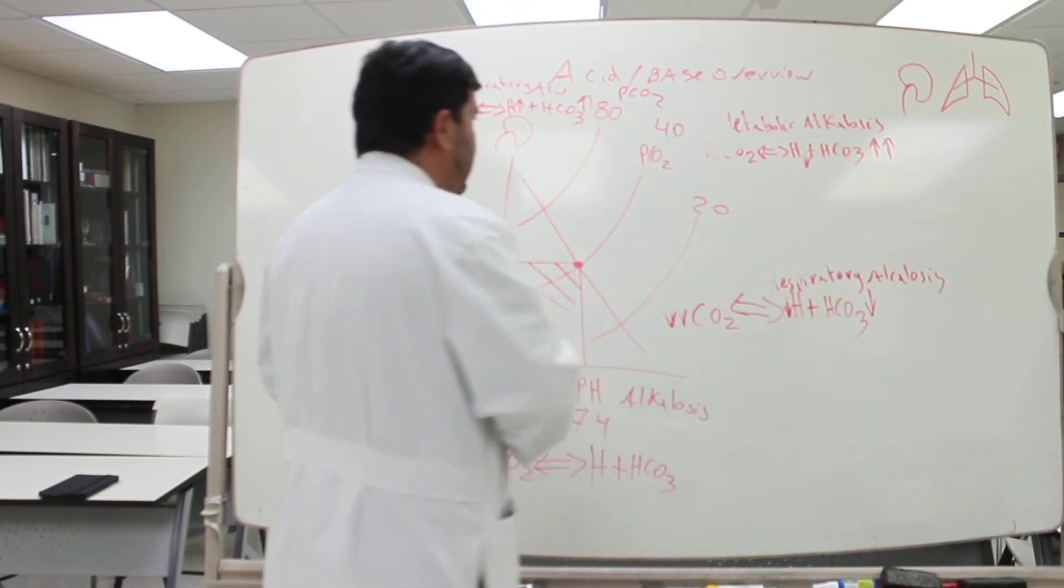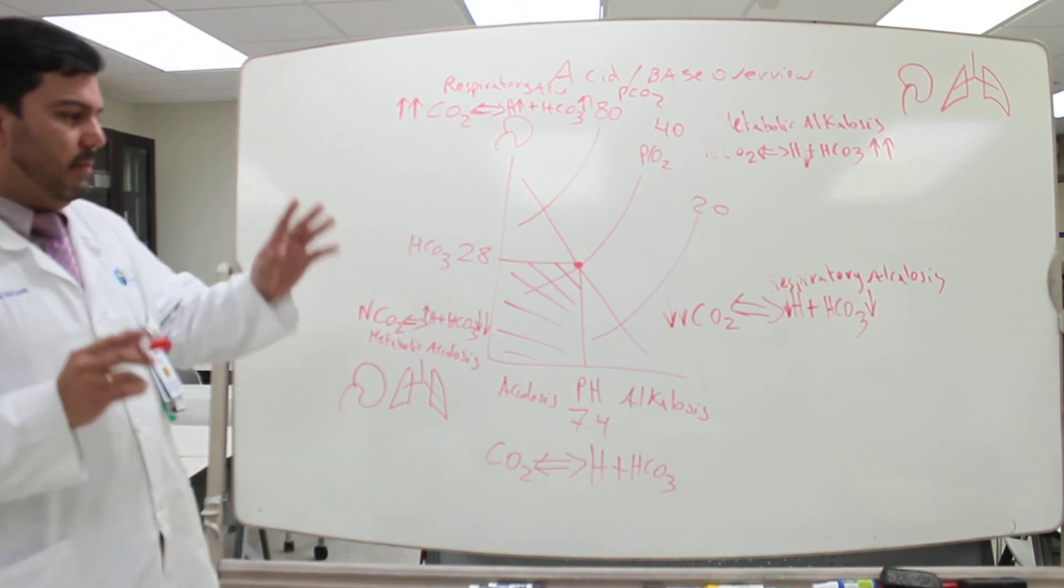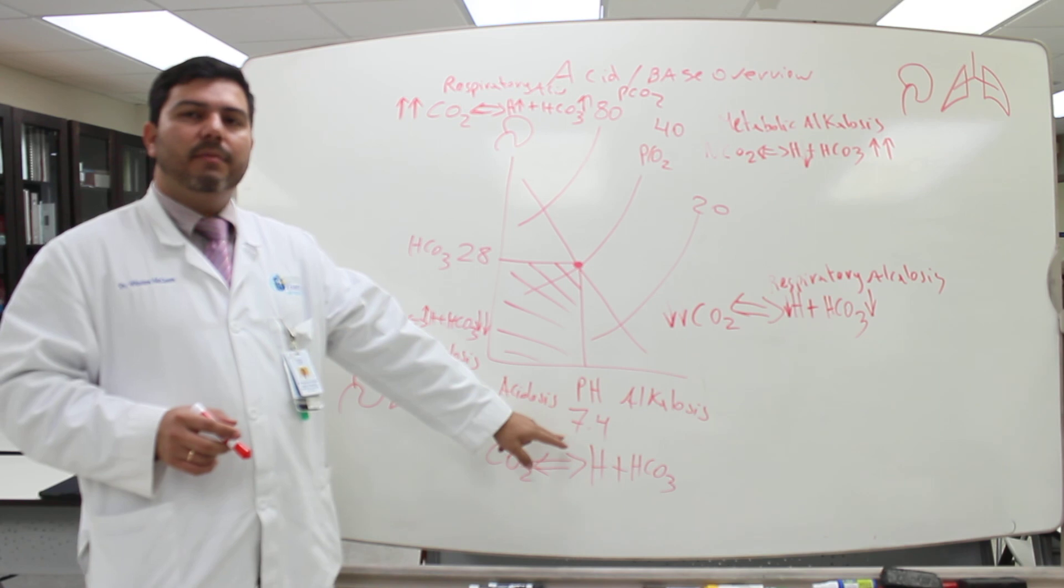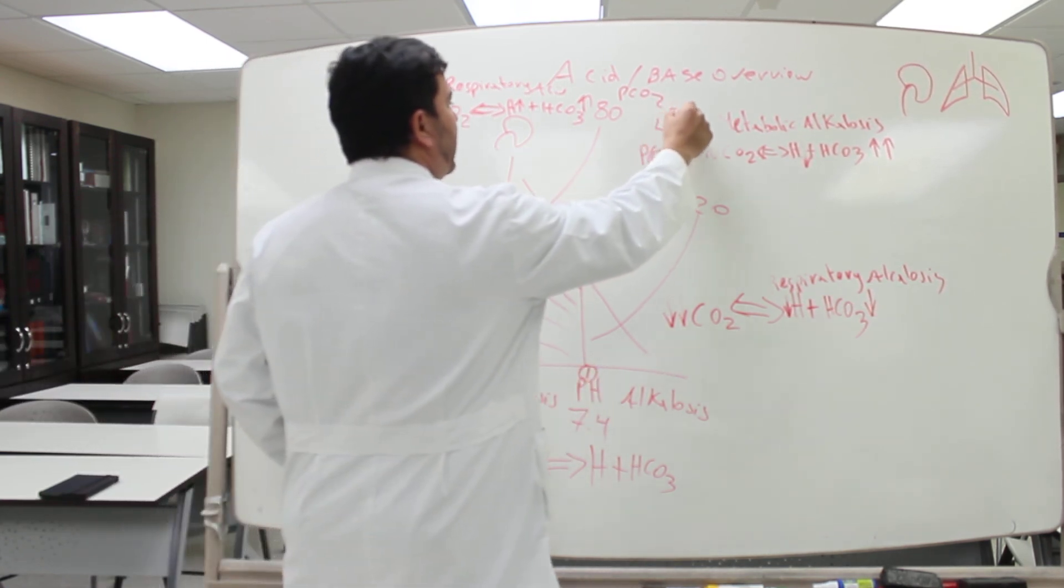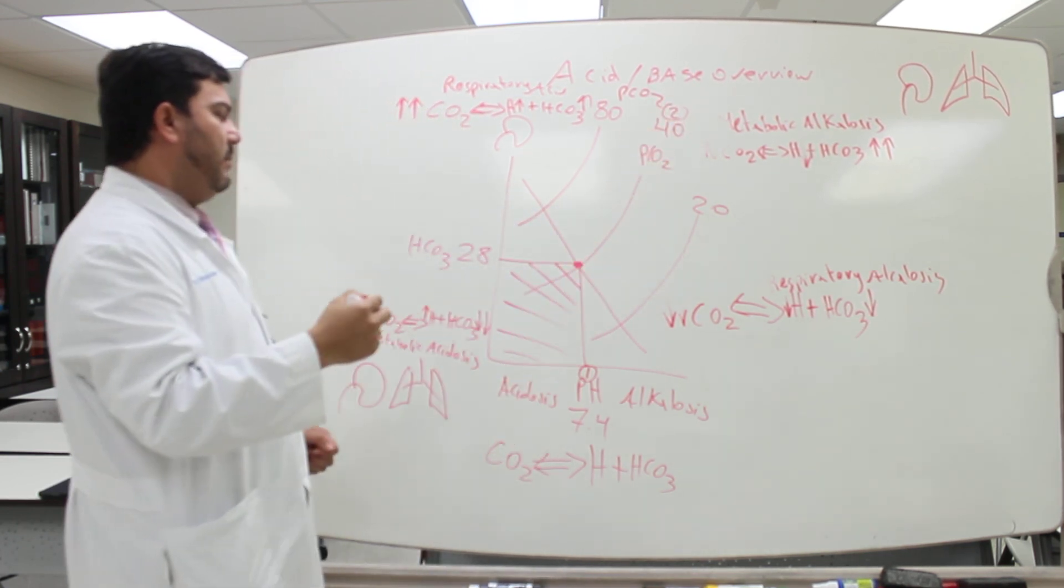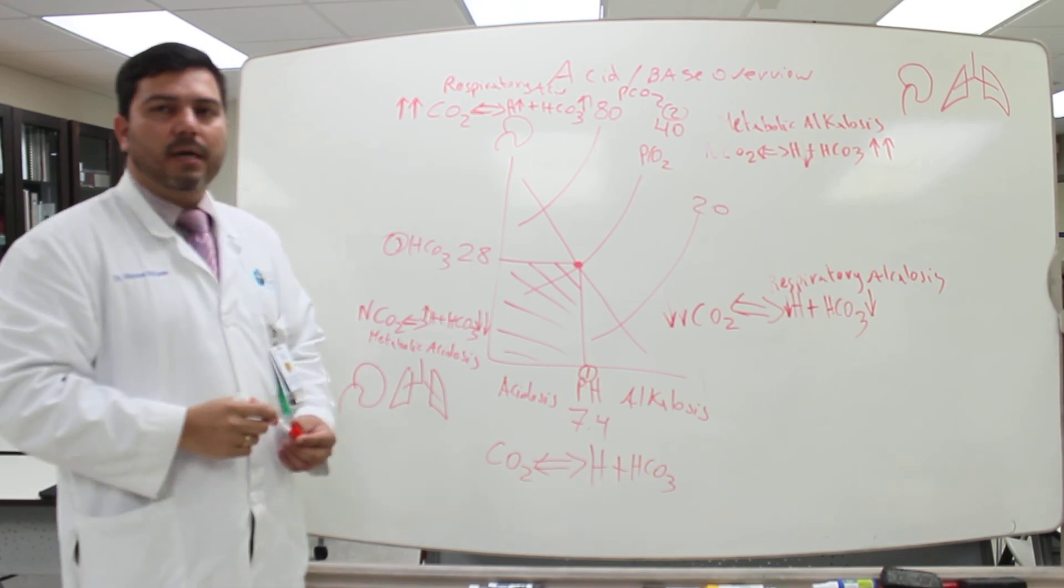So, this is a very simple way to address the ABG. Let's remember one more time. The first number you check is the pH. The second number you check is the PCO2. And the last number you check is the bicarbonate. Thank you very much. I hope you enjoyed the video.